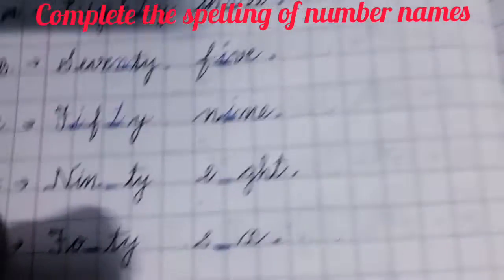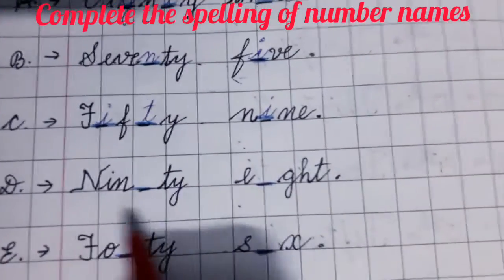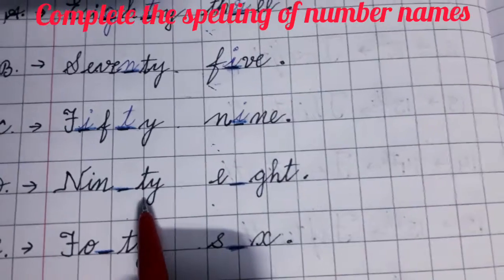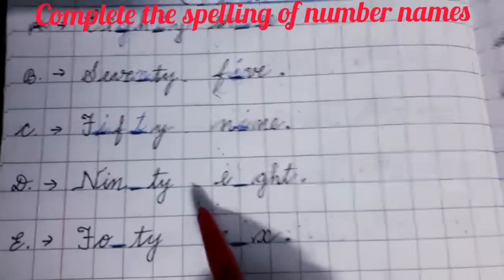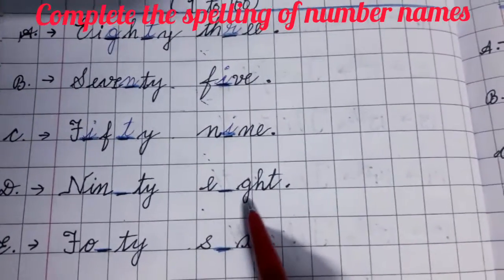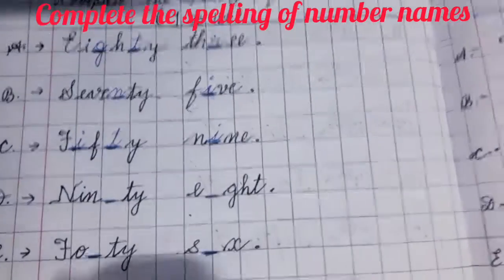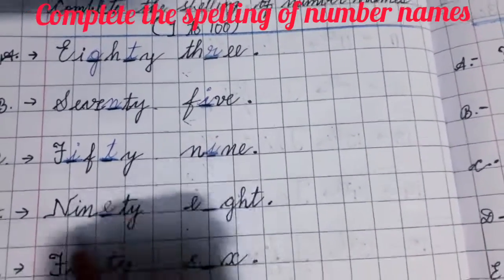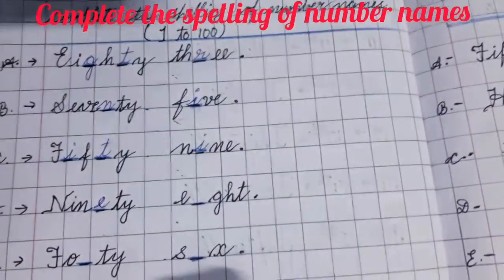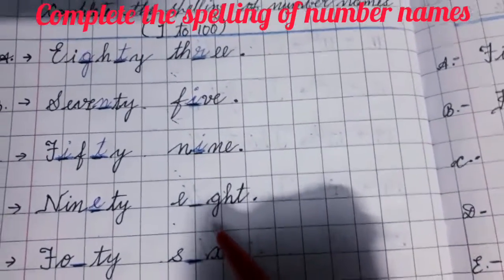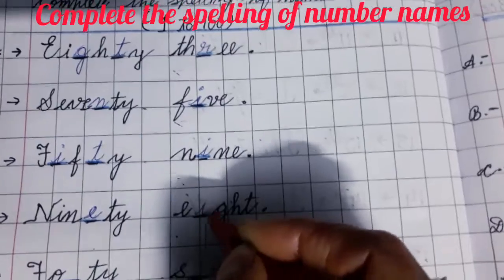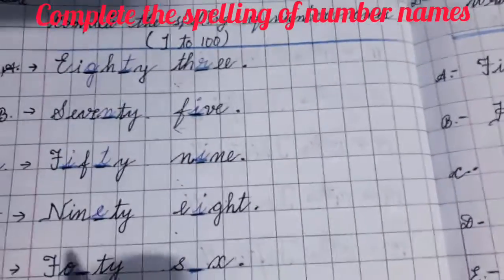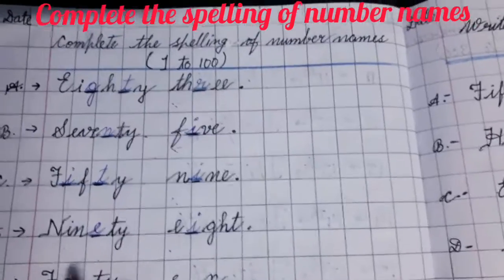Now come to the next. Write D, put an arrow. Write N I N blank space T Y — then leave a block — then write E blank space G H T. N I N is already written, what you will fill here? E. So this is the word 90 — NINETY. And in the next word, you will fill in I — E I G H T — 8. So this spelling is of 98 — NINETY EIGHT.